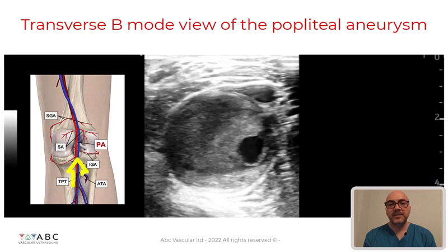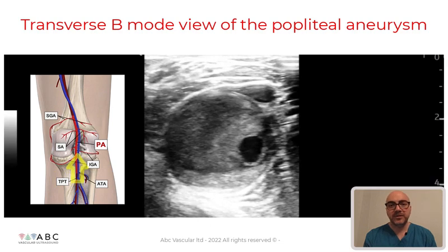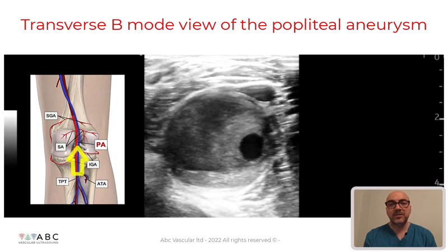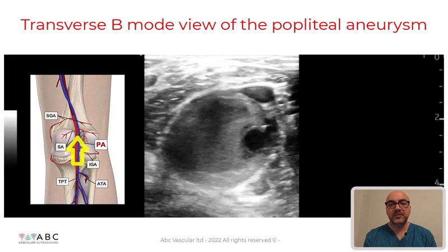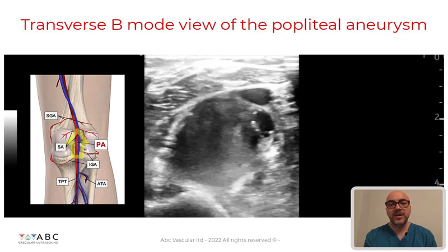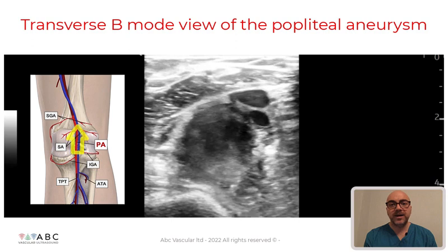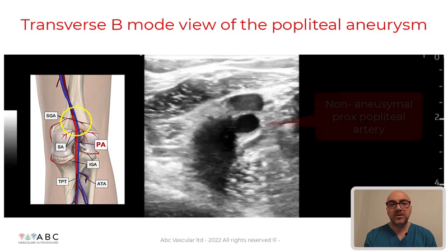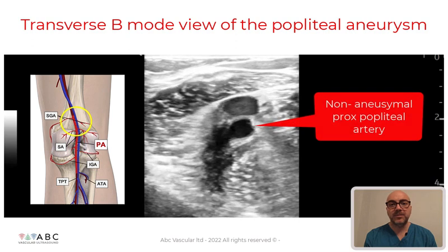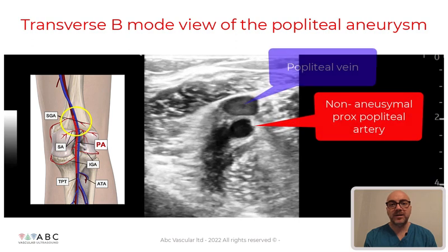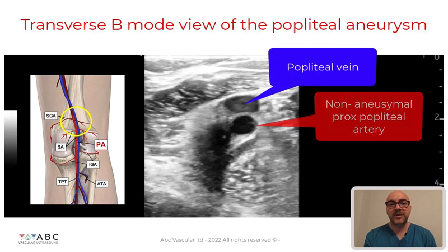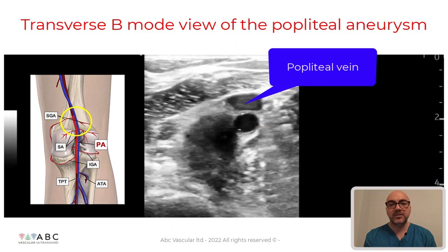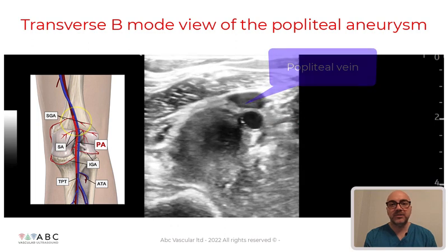By sliding the transducer upwards towards the popliteal fossa we can identify the proximal segment of the non-aneurysmal popliteal artery and popliteal vein, which lies superiorly to the artery.